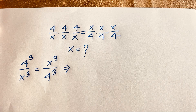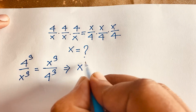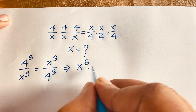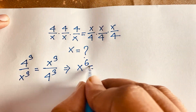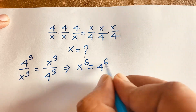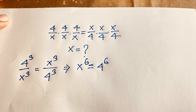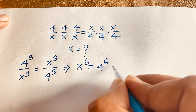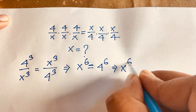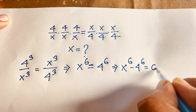Now I can see this expression: this side times this side. It will be x to the power 6 on the left, and since the sides are equal, it will be 4 to the power 6 on the right. So the expression becomes x to the power 6 minus 4 to the power 6 is equal to 0.